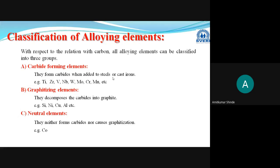Before going to the actual effect of alloying elements when added to steel, we should first understand the classification of alloying elements. After understanding the classification, you will automatically be able to find out what their effect will be. But before starting, we will first understand what is the difference between plain carbon steel and alloy steels.